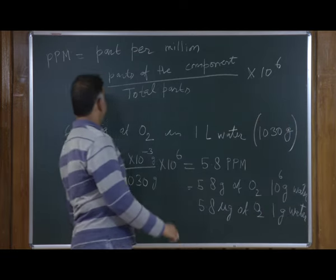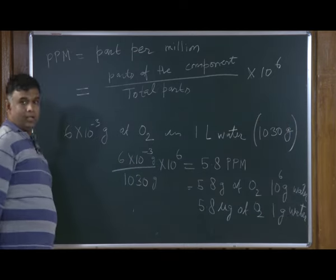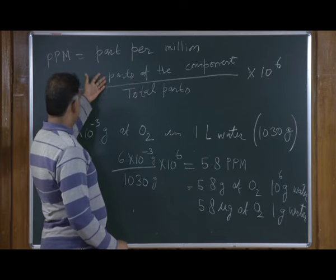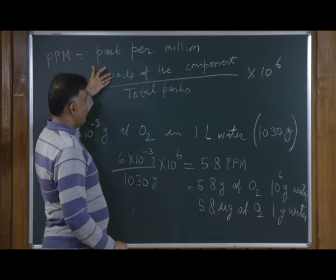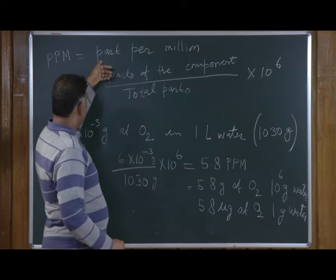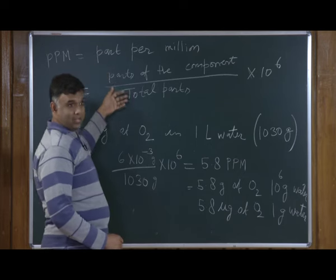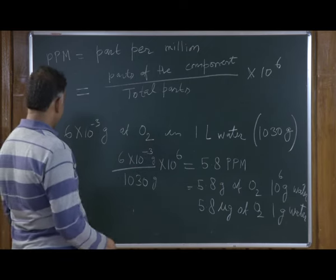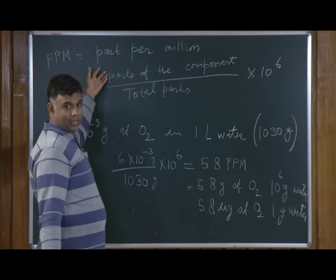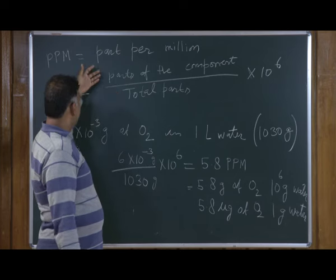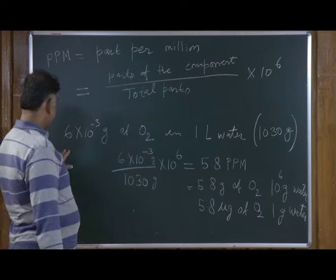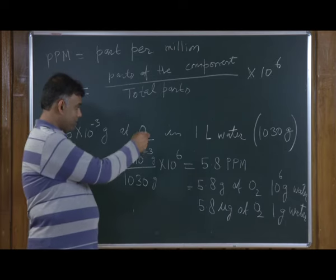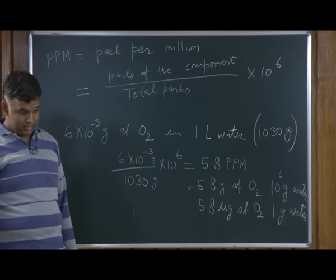PPM parts can be expressed as volume — that would be volume by volume: what volume of the component is present in 10⁶ liters of total volume. We can also have mass by volume and mass by mass. We just calculated the concentration of oxygen in sea water in PPM using mass by mass concentration units.